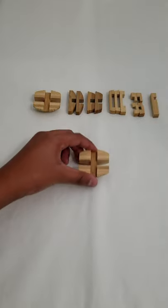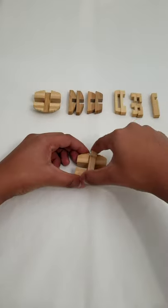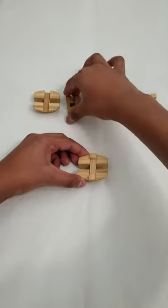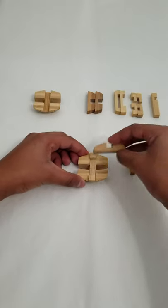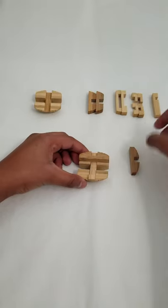Start by taking out one of the half barrel pieces and attach a piece that looks like a C. Then slide two arc shape pieces on both sides of the C.